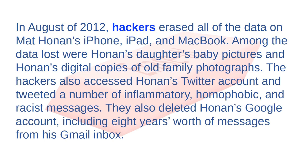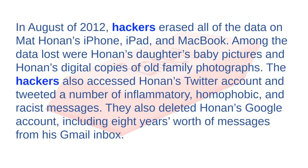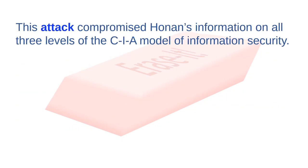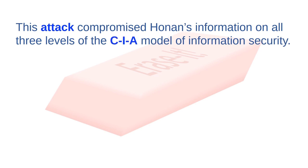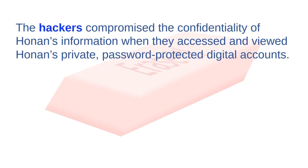In August of 2012, hackers erased all of the data on Matt Honan's iPhone, iPad, and MacBook. Among the data lost were Honan's daughter's baby pictures and digital copies of old family photographs. The hackers also accessed Honan's Twitter account and tweeted a number of inflammatory, homophobic, and racist messages. They also deleted Honan's Google account, including eight years' worth of messages from his Gmail inbox.